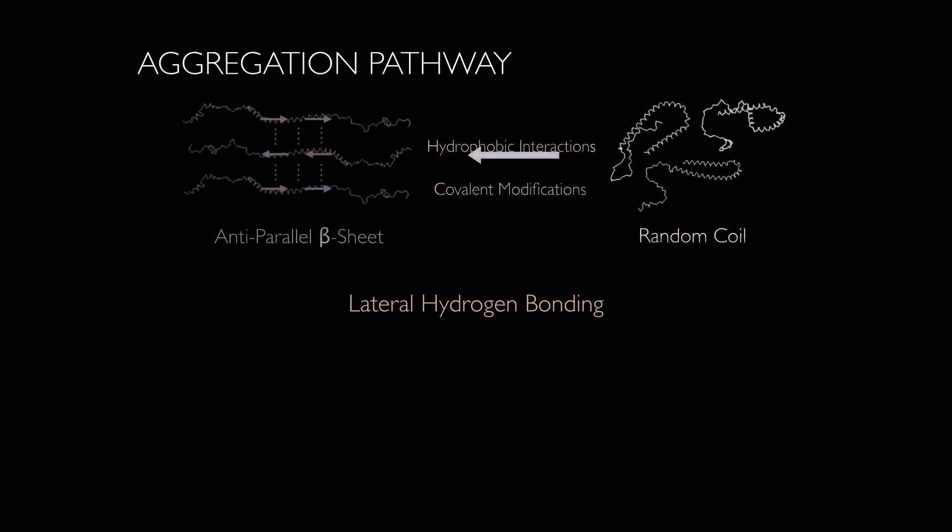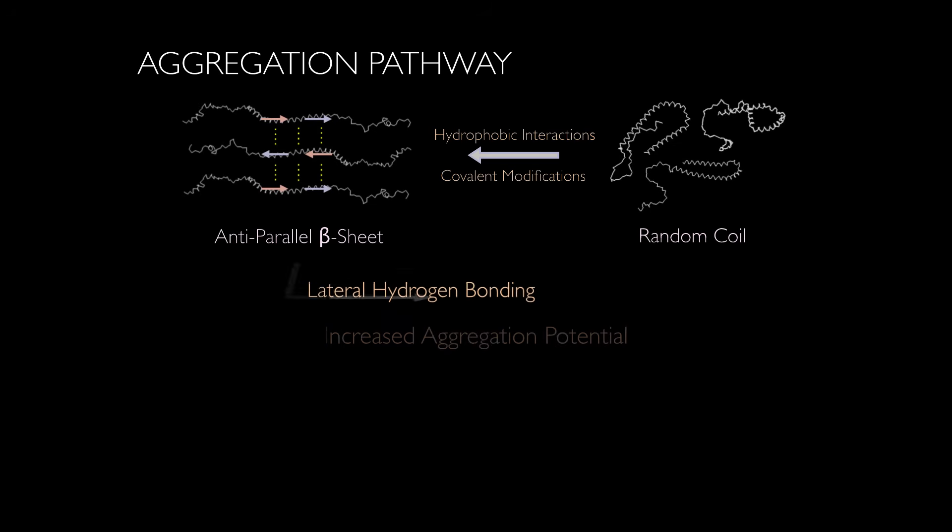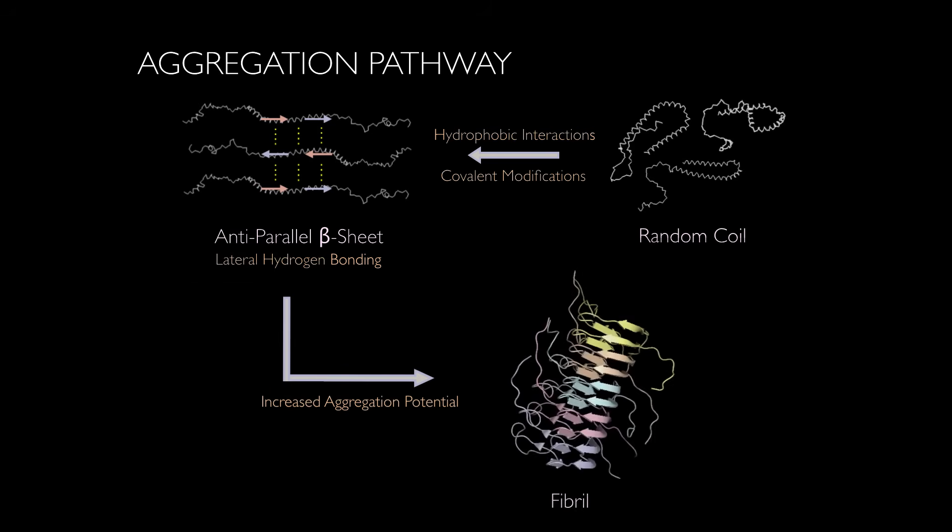The structure of alpha-synuclein thus provides evidence for an aggregation pathway. Although alpha-synuclein exists primarily as a random coil, covalent modifications, such as serine-129 phosphorylation, as well as hydrophobic interactions, particularly at the NAC, allow for the polymerization of various alpha-synuclein proteins into an anti-parallel beta-sheet conformation. Lateral and linear hydrogen bonding confer greater stability to the beta-sheet, further amplifying the aggregation potential of alpha-synuclein and permitting the formation of fibrils.